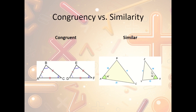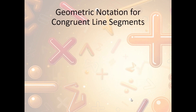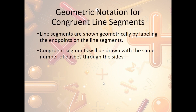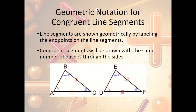Congruent figures have all the same sizes — both triangles have exactly the same angle measures and side lengths; they look exactly the same. Similar means it's blown up or shrunk down: same shape, proportional, but not the same size. Geometrically, congruent segments are shown with the same number of dashes through the sides. A single dash on two sides means those sides are exactly the same length; double dashes indicate two other sides match, and triple dashes indicate a third pair.